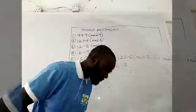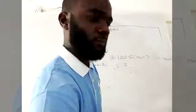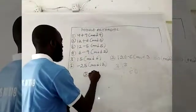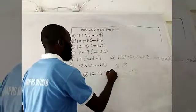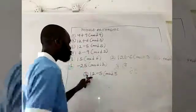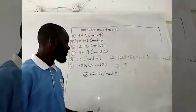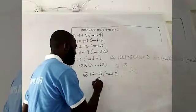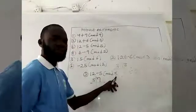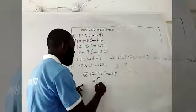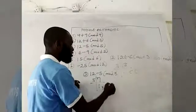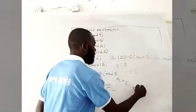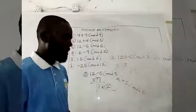For number three, 12−5 mod 5: 12 minus 5 gives 7. Dividing 7 by the modulus 5 gives 1 remainder 2. That remainder becomes the answer, so 12−5 mod 5 equals 2 in mod 5.